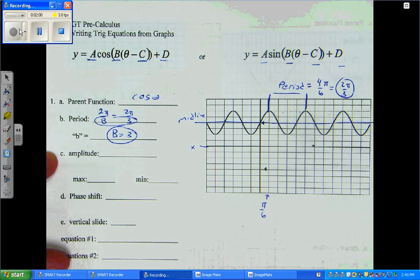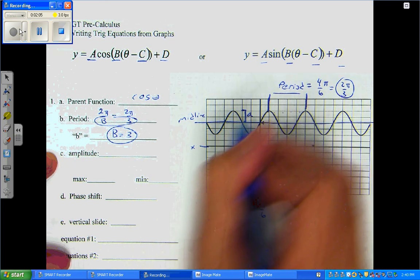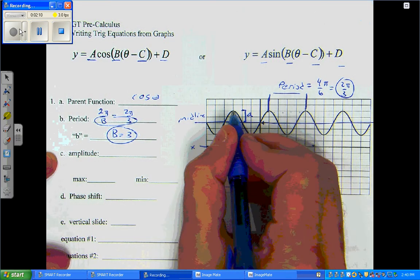So, to get the amplitude, what we're going to do is take the distance from the top to the midline. That's our amplitude. And, I just count that: 1, 2.